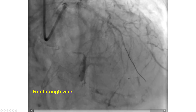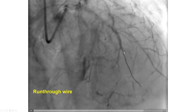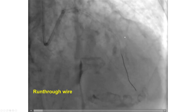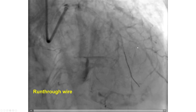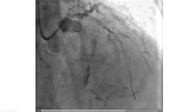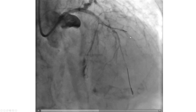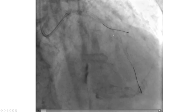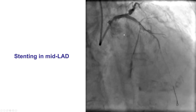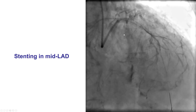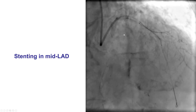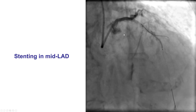Finally, we were able to get a workhorse wire all the way into the mid to distal LAD and achieved some flow into the LAD and TIMI flow into the large diagonal vessel as well. We attempted to advance a guidewire into the diagonal given the large size, but wiring was quite challenging. After multiple attempts we gave up and decided to place a stent into the mid LAD to cover the area of ulceration.